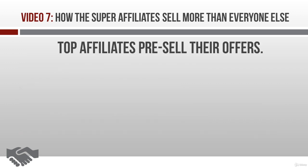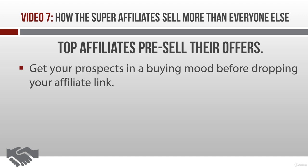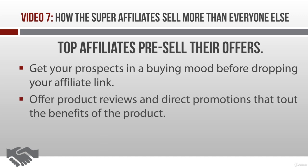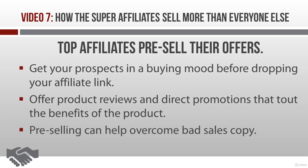The third thing top affiliates do to boost conversion rates is they pre-sell their offers. In other words, they get prospects in a buying mood before they drop their affiliate link. They do this by offering product reviews and direct promotions that tout the benefits of the product. This tactic boosts your conversion rate no matter what kind of sales letter is behind your affiliate link — and it's especially helpful if the sales letter isn't great. You can overcome weak copy by pre-selling your prospects so they're ready to hit the order button as soon as they land on the sales page.